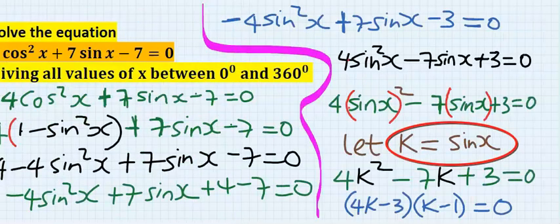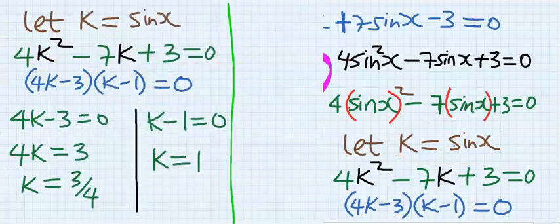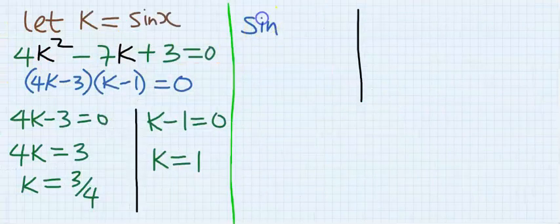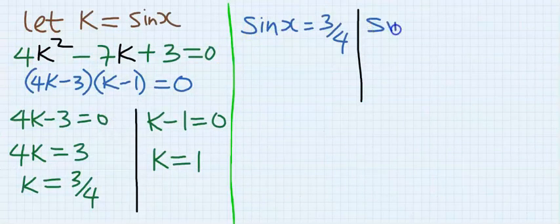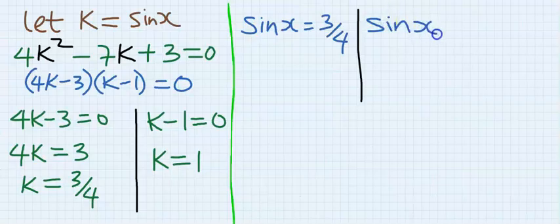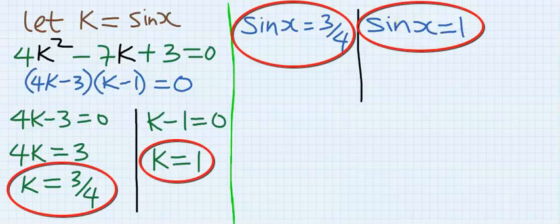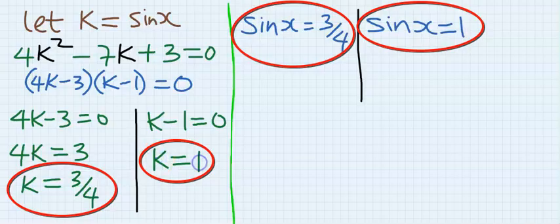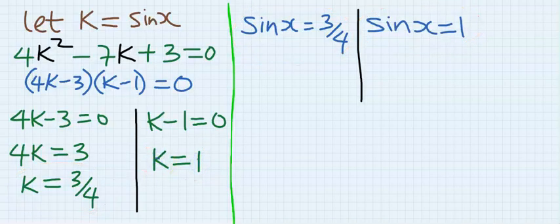But the problem given to us doesn't have a k, so instead of k we actually represented it because the k was sine x. So we're going to bring back our sine. Here k is equal to one, which is sine x equals one. K is equal to three over four, so sine x equals three over four. I'm looking for x, so on the other side is going to be sine inverse of three over four, and here I'm going to have sine inverse of one.